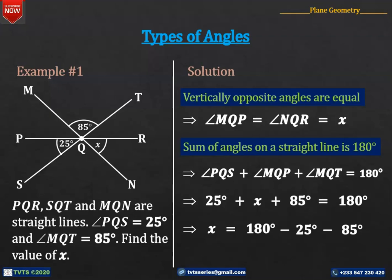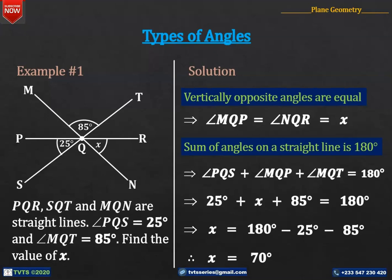180 minus 25 minus 85 gives 70 degrees. Therefore, X is equal to 70 degrees.